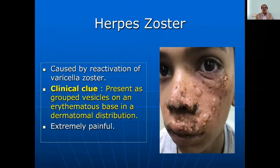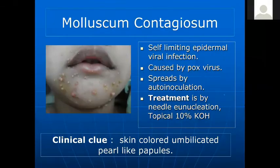Herpes zoster presents with grouped vesicles on an erythematous base in a dermatomal distribution — here the maxillary division is involved. It is extremely painful, and acyclovir or other antivirals can be used.